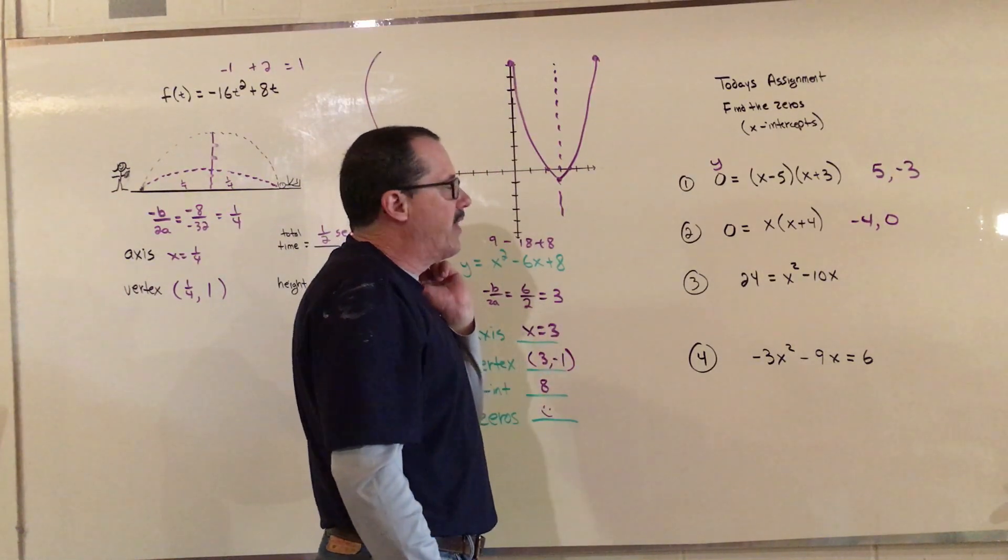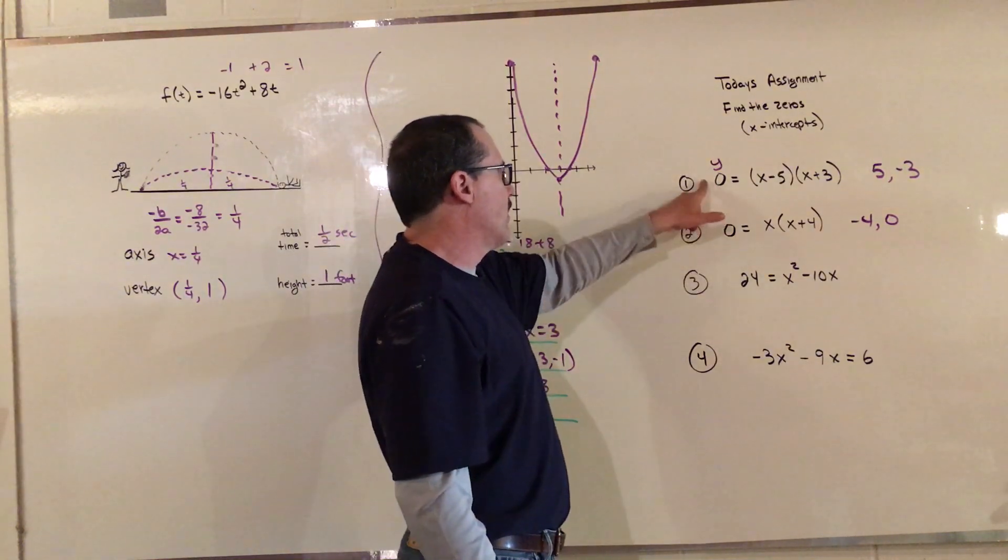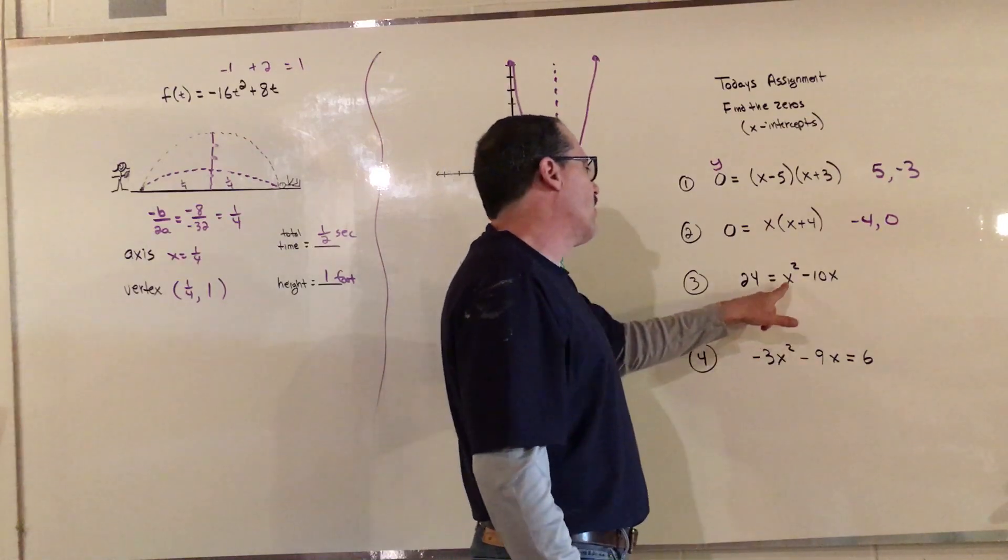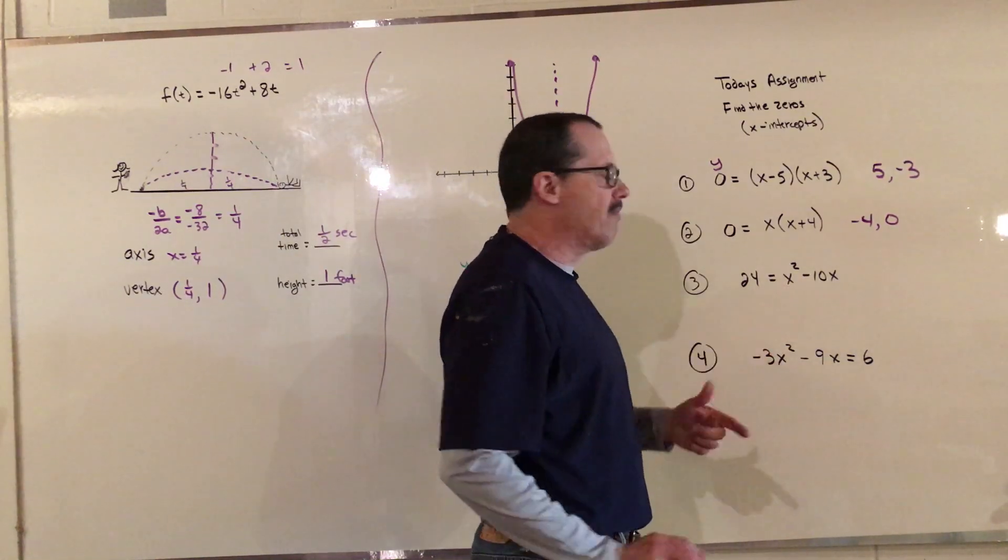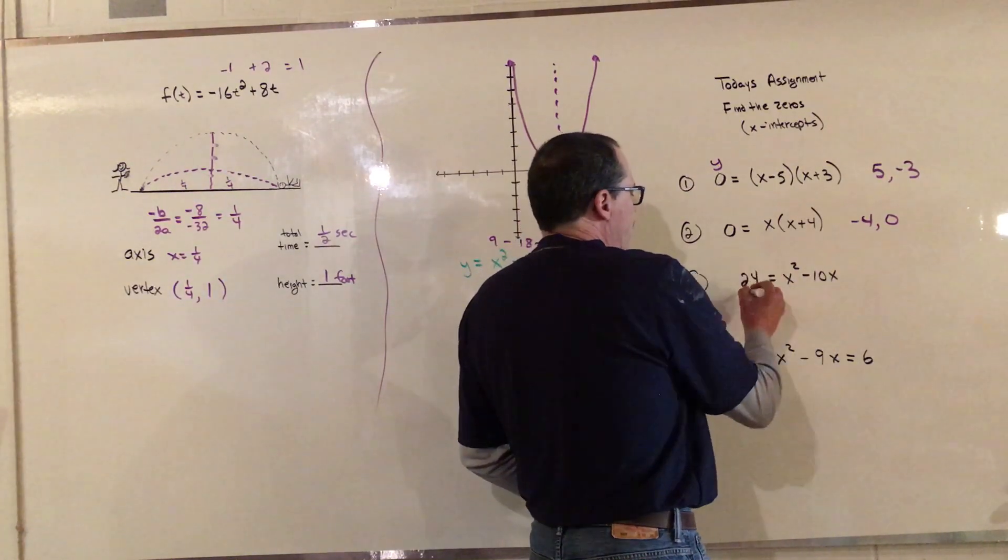When you come down to number 3, what we have to do first is put that in standard form and then we're going to factor it to make it look like one of these two. When you factor or standard form, you always want your x squared positive because it's much easier to work with. So I'm going to kick this over here by subtracting 24 from both sides, and that will give me 0 equals x squared minus 10x minus 24.